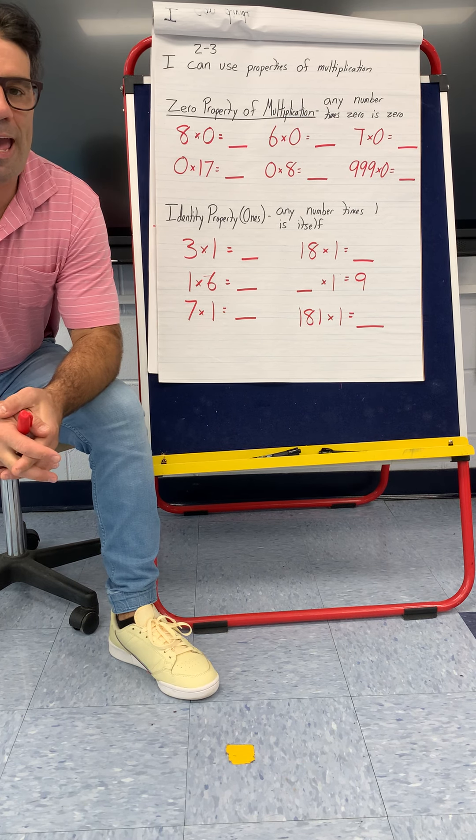The first one is called the zero property of multiplication, which means anything times zero is zero every time. Like eight times zero is zero, zero times six is zero, one million times zero is zero.